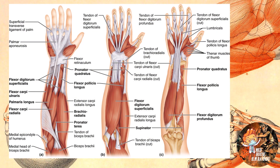In this picture you can see the muscles of the first layer: pronator teres, flexor carpi radialis, palmaris longus, and flexor carpi ulnaris. In this picture you can see the second layer: flexor digitorum superficialis. In this picture you can see the third and fourth layers: flexor digitorum profundus, flexor pollicis longus, and pronator quadratus.